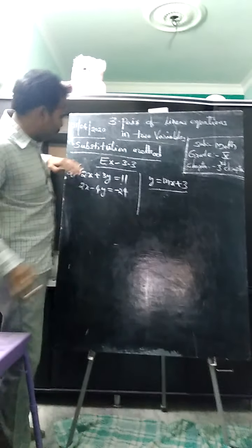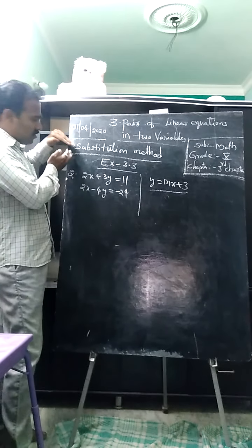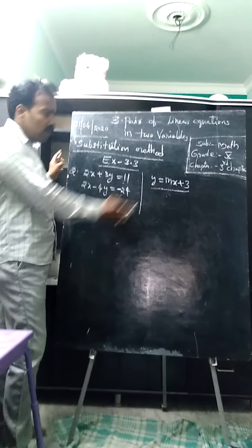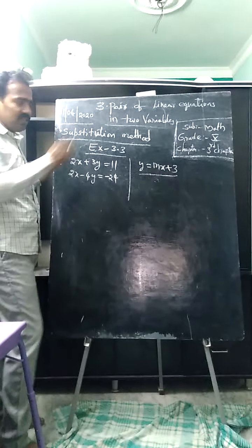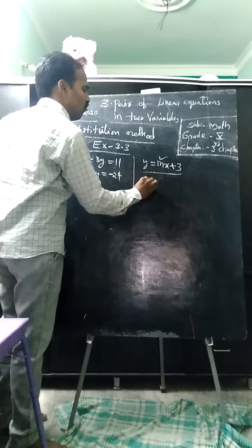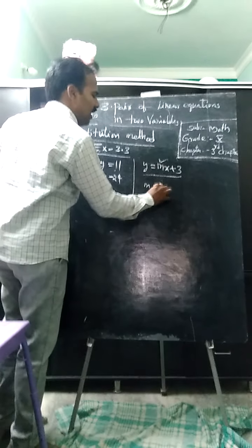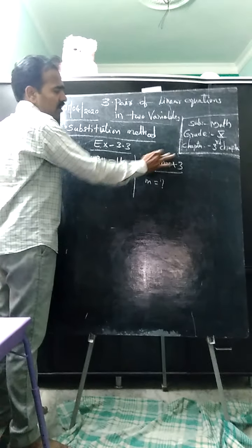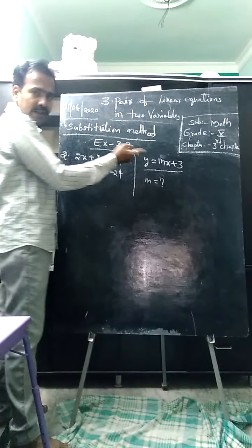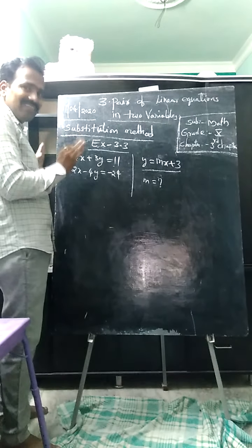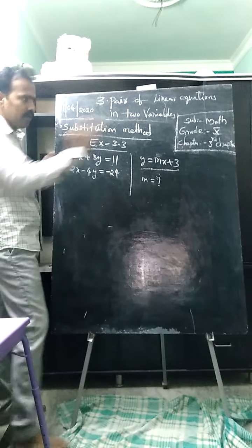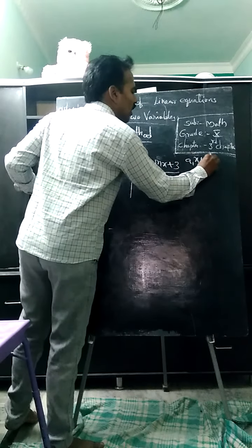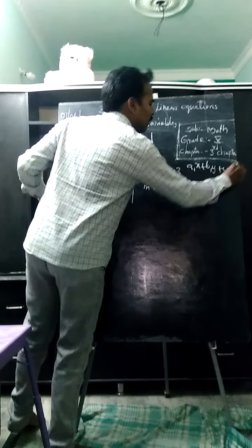We should solve these two equations by using the substitution method. We get the x value and y value, and put them in the equation y equals mx plus 3. After that we will get the value of m. First step: we will check whether a unique solution exists or not. Before that, write the standard form.